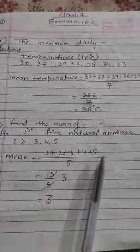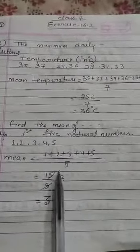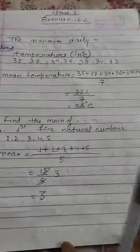So what is mean? 1 plus 2 plus 3 plus 4 plus 5 upon 5. Total number of observations is 5, so what is 15 upon 5? That is 3.